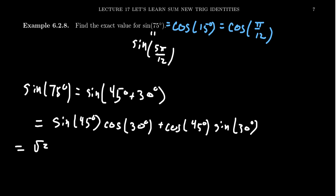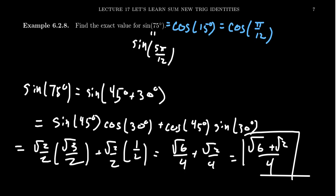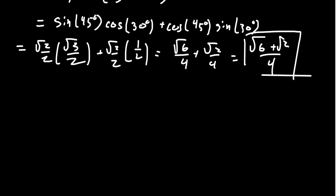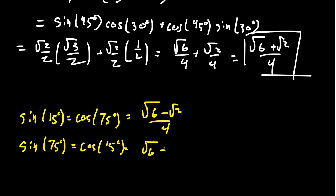Sine of 45 degrees is root 2 over 2, cosine of 30 degrees is root 3 over 2, cosine of 45 degrees is root 2 over 2, and sine of 30 degrees is one half. This gives us the square root of 6 over 4 plus the square root of 2 over 4, which equals the square root of 6 plus the square root of 2, all over 4. This is sine of 75 degrees, which is also cosine of 15 degrees.